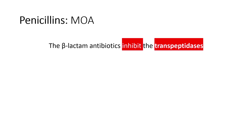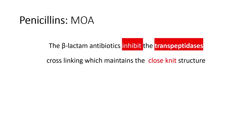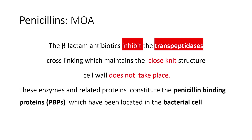These beta-lactam antibiotics inhibit the transpeptidase enzyme required for cross-linking, which maintains the closed-knit structure of the cell wall. When transpeptidase is inhibited, cross-linking does not take place, making the cell wall very weak. All these enzymes and related proteins are collectively called penicillin binding proteins, which are mainly located in the bacterial cell wall.